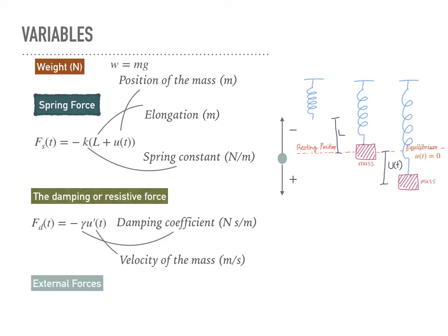You can also have an optional external force — or more than one — applied to the spring system to change its behavior. With external forces, the system becomes a non-homogeneous system. Without any external forces, the system is a homogeneous system.